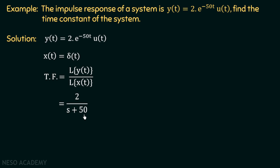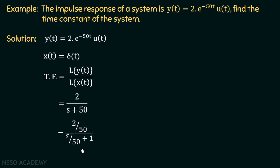To convert to the standard time constant form, we take 50 common from the denominator to get G(s) = (2/50) / (s/50 + 1). Comparing with the standard form G(s) = k/(s*tau+1), we get k = 2/50 and the time constant tau = 1/50 seconds.